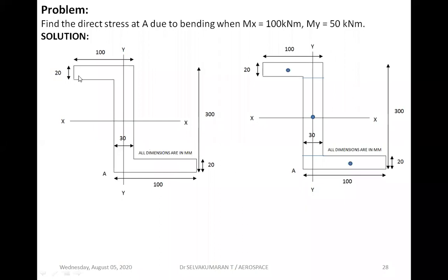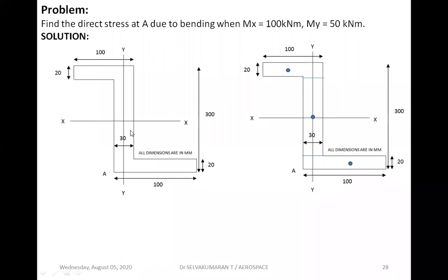For an I-section, the top horizontal portion is the top flange and the bottom one is the bottom flange. The same applies here: top flange, bottom flange, and the vertical structure is the web. Top flange width is 100 mm, top flange thickness is 20 mm, bottom flange width is 100 mm, bottom flange thickness is 20 mm. Depth of the Z-section is 300 mm. The web height is 300 − 20 − 20 = 260 mm.